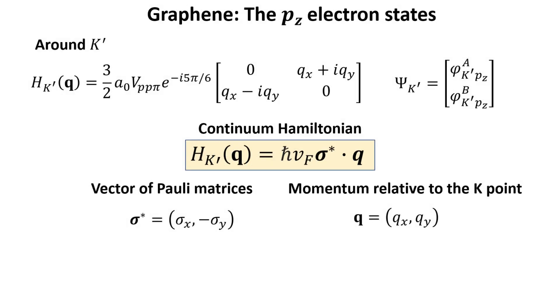A similar line of reasoning gives us the Hamiltonian around the K prime point. The only distinction is the complex conjugate operation in the vector of Pauli matrices. Its effect is to only change the sign of the sigma_y, the y component of this vector.